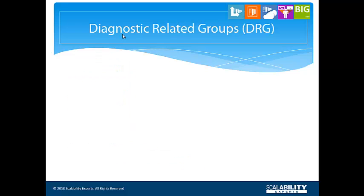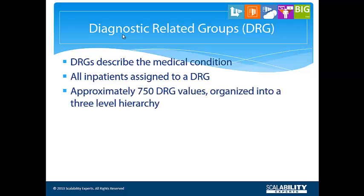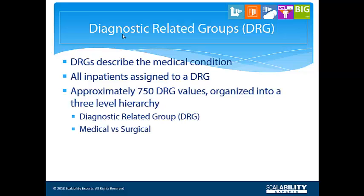Every patient who is admitted to a hospital will be assigned to a diagnostic-related group, or DRG, based on his or her diagnoses and procedures, as well as the severity of their case. This is done by a program called a grouper. There are approximately 750 DRGs. Each DRG is one of two types, either medical or surgical, and is further grouped into major diagnostic categories, or MDCs.